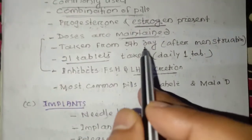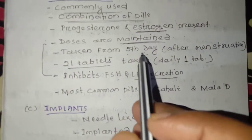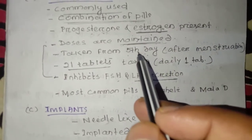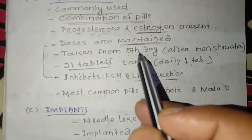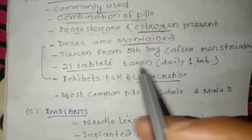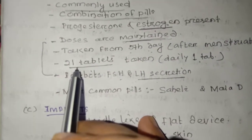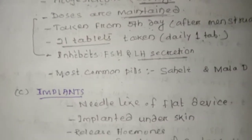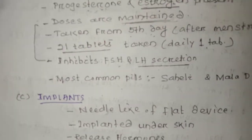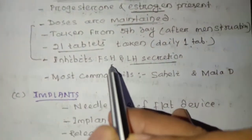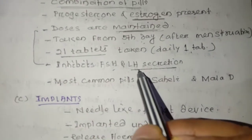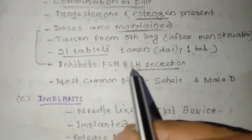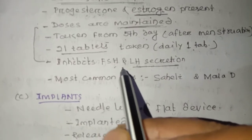After menstruation, we use the tablet. The tablet works on FSH and LH — the follicle stimulating hormone and the luteinizing hormone are secreted, and the pill suppresses their secretion.